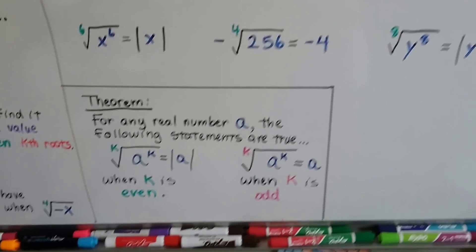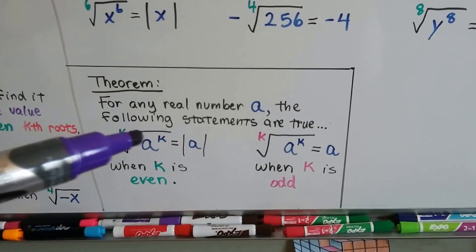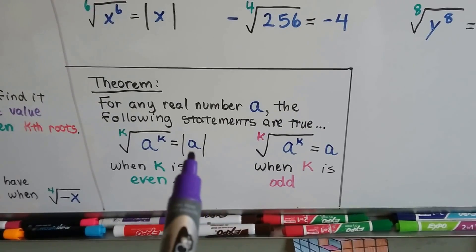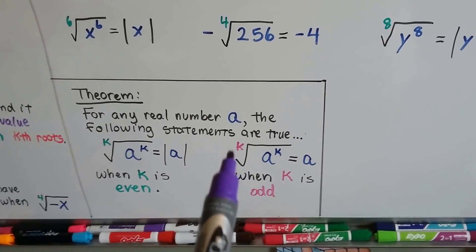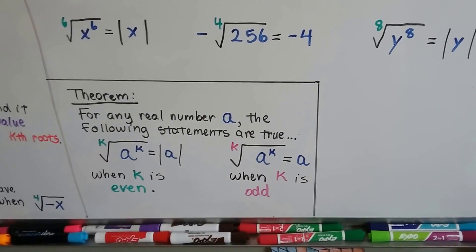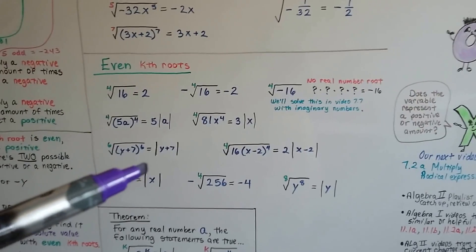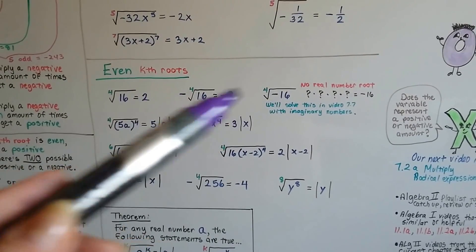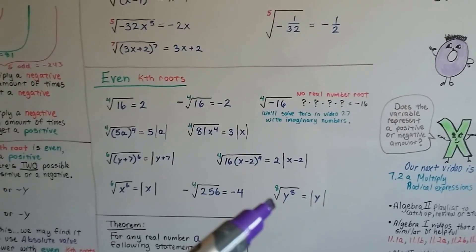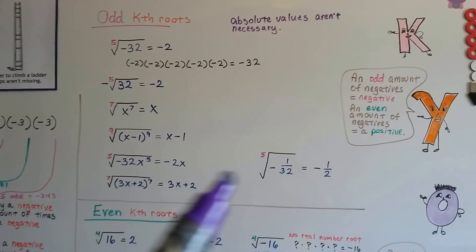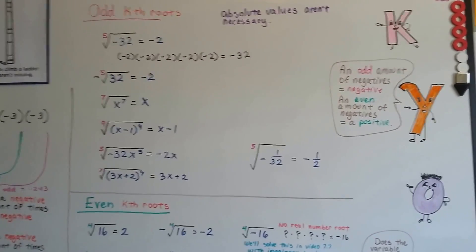Here is the theorem: for any real number a, the following statements are true. The kth root of a to the kth power — when k is even — equals the absolute value of a. When k is odd, absolute value bars are not needed. Looking at the examples, all the even kth roots that had variables had absolute value bars around them, while the odd kth roots had no absolute value bars because they aren't necessary.